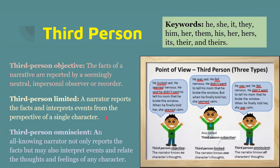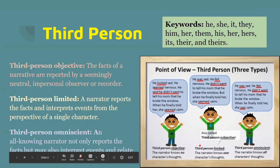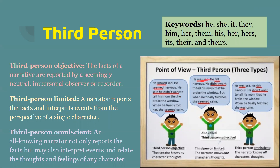For third person limited, a narrator reports the facts and interprets the events from the perspective of a single character — just one character. The narrator knows one character's thoughts. This can also be called third person subjective. So: 'He was sad. He felt nervous. He didn't want to tell his mom that he broke the window. But when he finally told her, she seemed calm.' We know that he was sad — he didn't just look sad — but the mom still only seemed calm; we don't actually know if she is calm.